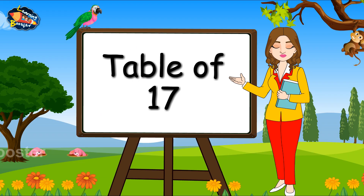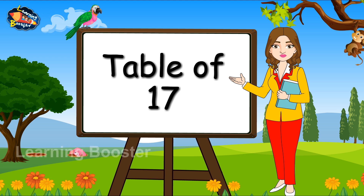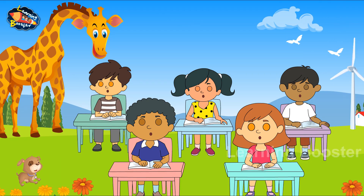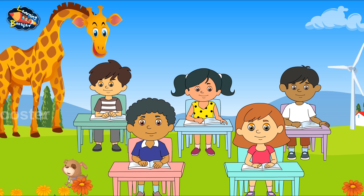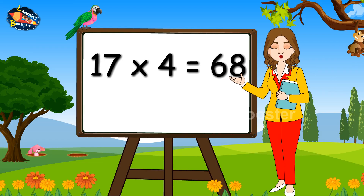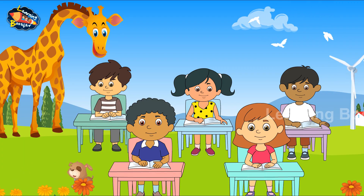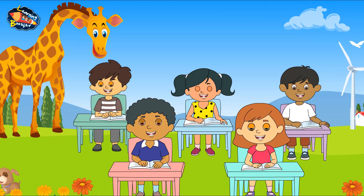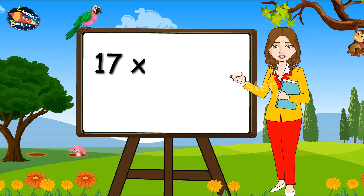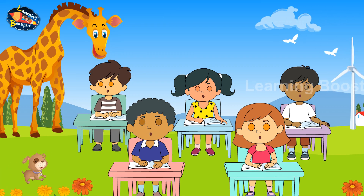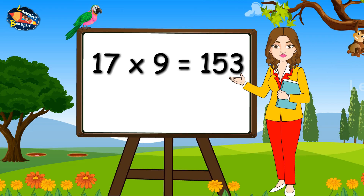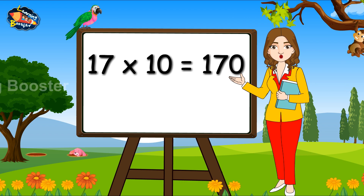Table of Seventeen. Seventeen ones are seventeen. Seventeen twos are thirty-four. Seventeen threes are fifty-one. Seventeen fours are sixty-eight. Seventeen fives are eighty-five. Seventeen sixes are one hundred and two. Seventeen sevens are one hundred and nineteen. Seventeen eights are one hundred and thirty-six. Seventeen nines are one hundred and fifty-three. Seventeen tens are one hundred and seventy.